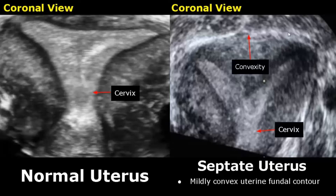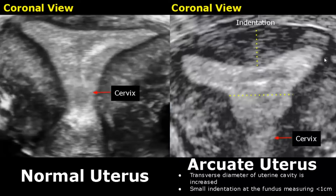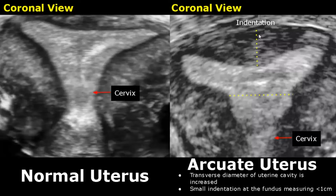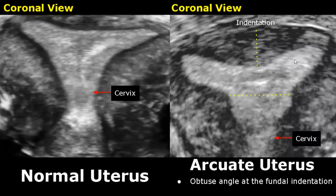The uterine fundal contour is convex-shaped, and can also be flat. An arcuate uterus is the least serious type of congenital uterine abnormality. The transverse diameter of the uterine cavity is increased, with a small indentation at the fundus measuring less than 1 centimeter. An obtuse angle is formed at the fundal indentation. An arcuate uterus is actually considered a normal variant and has very little association with reproductive failure.